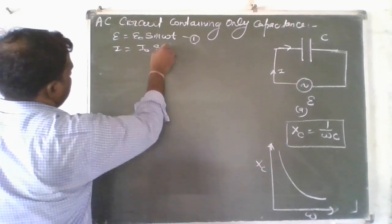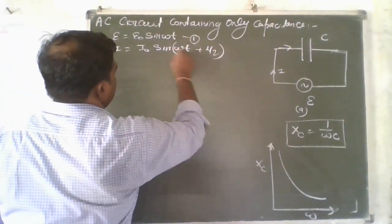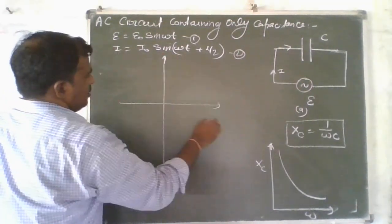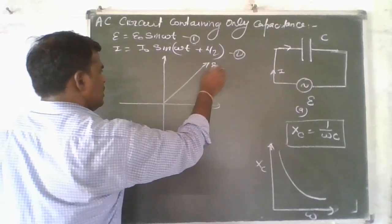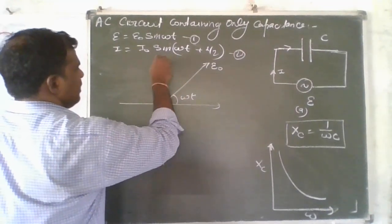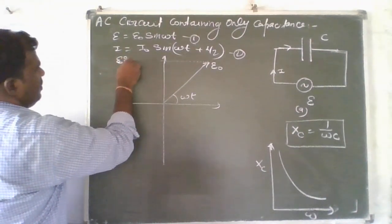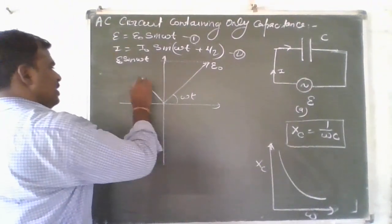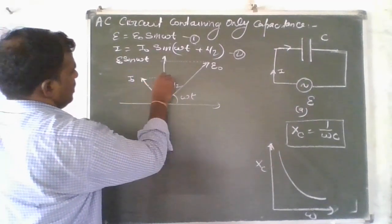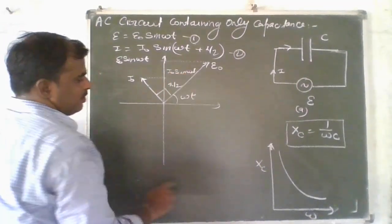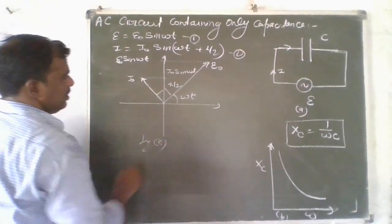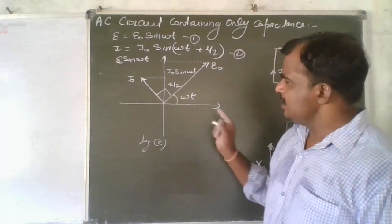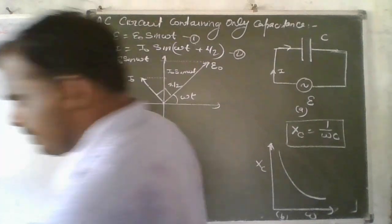I equal to I₀ sin(omega t plus pi by 2) shows that current leads voltage by 90 degrees. In the phasor diagram, this shows the variation of alternating EMF e with peak value E₀, and the current I₀ sin(omega t) with peak value I₀. The current vector is lead by 90 degrees. Figure C shows the phasor diagram of alternating EMF applied to the AC circuit, confirming that current leads by 90 degrees.